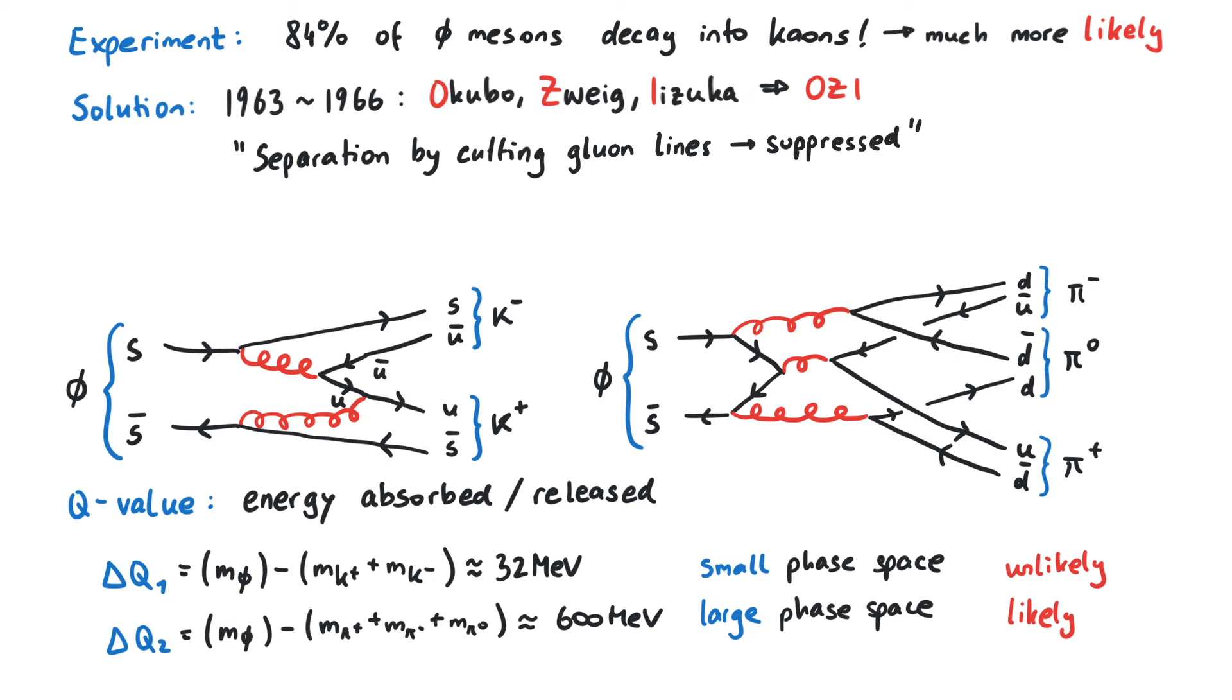As you can see, if we cut the pion diagram here, we only cut gluon lines. But then, the initial and final states are completely separated. For the left diagram, we would also have to cut quark lines.